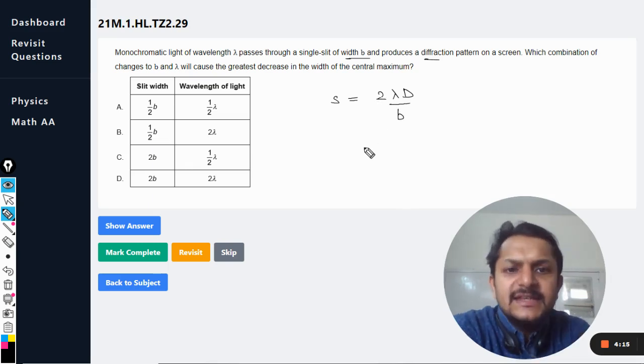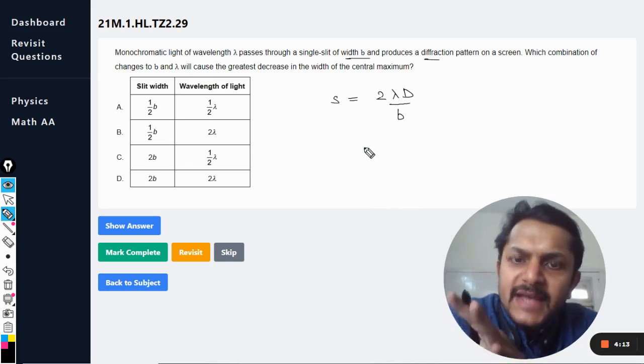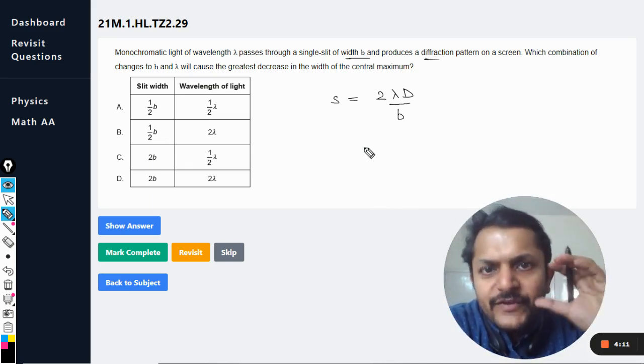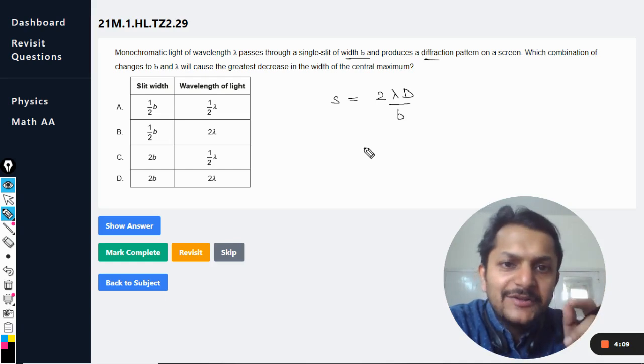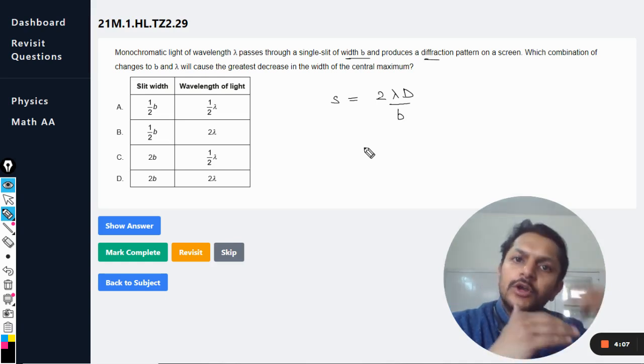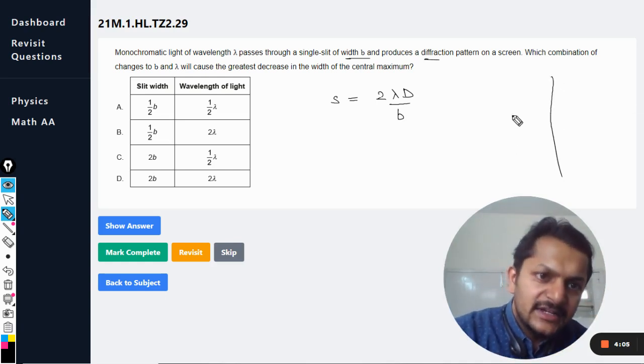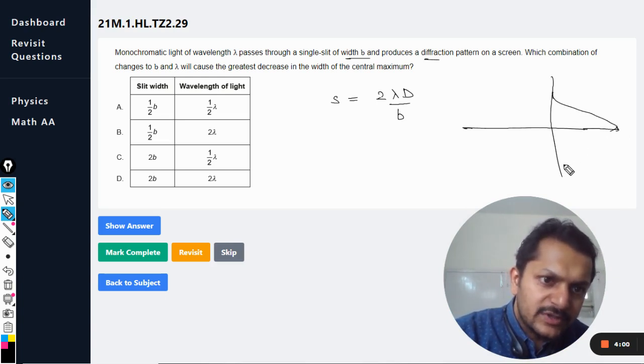B. The answer will be in centimeters, like the actual width of the central maxima. This lambda D by B was for one side, wasn't it?